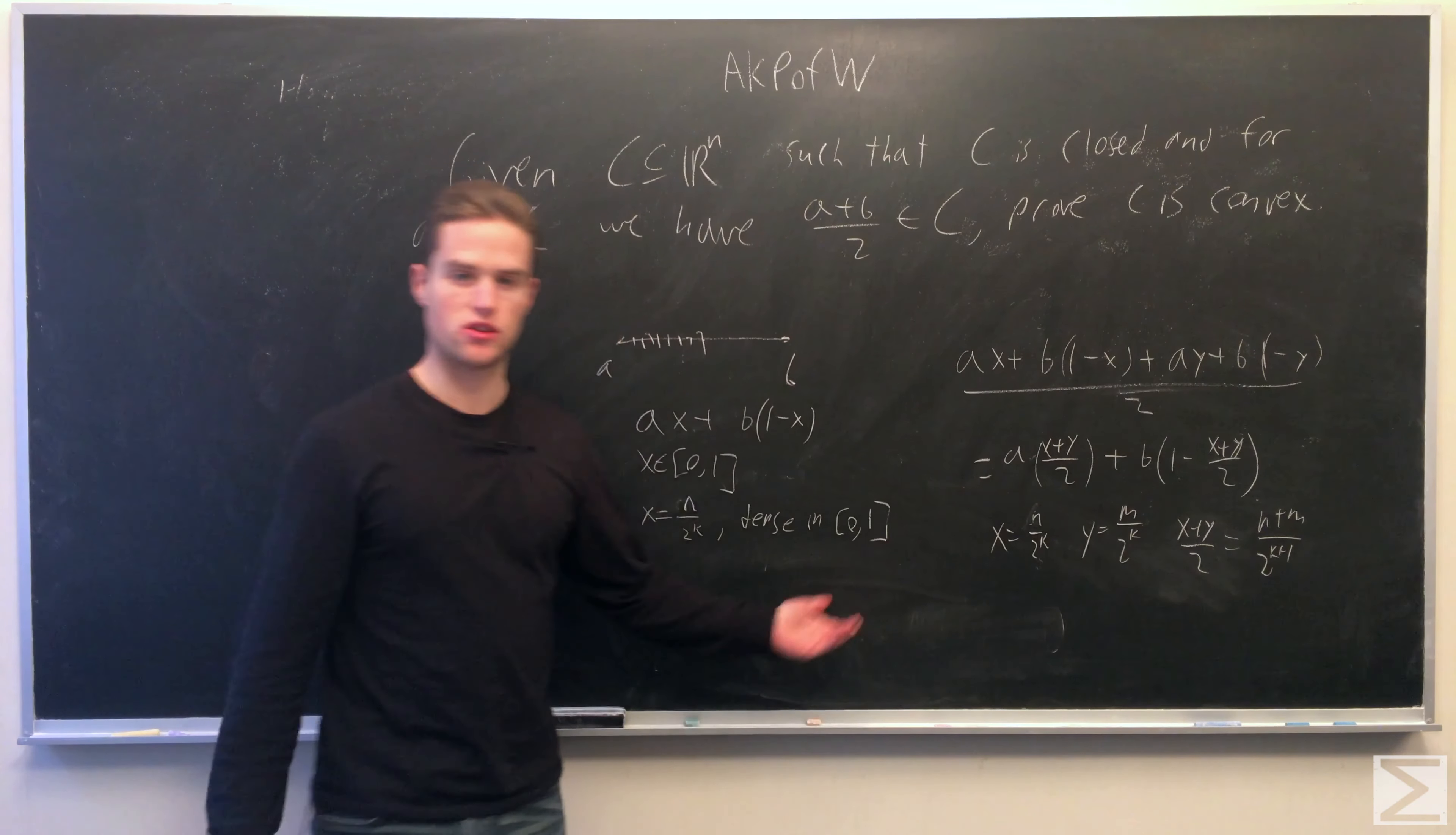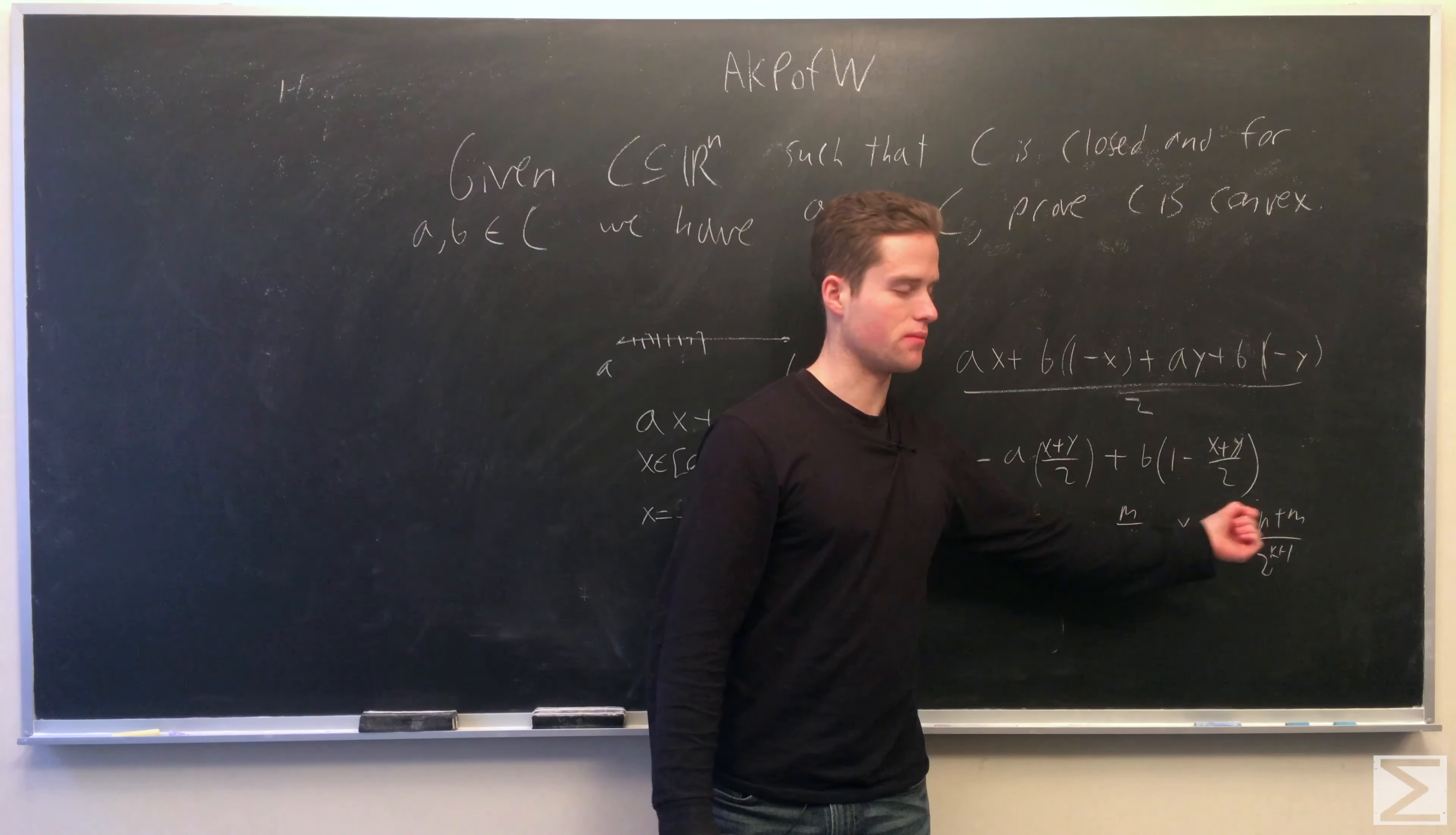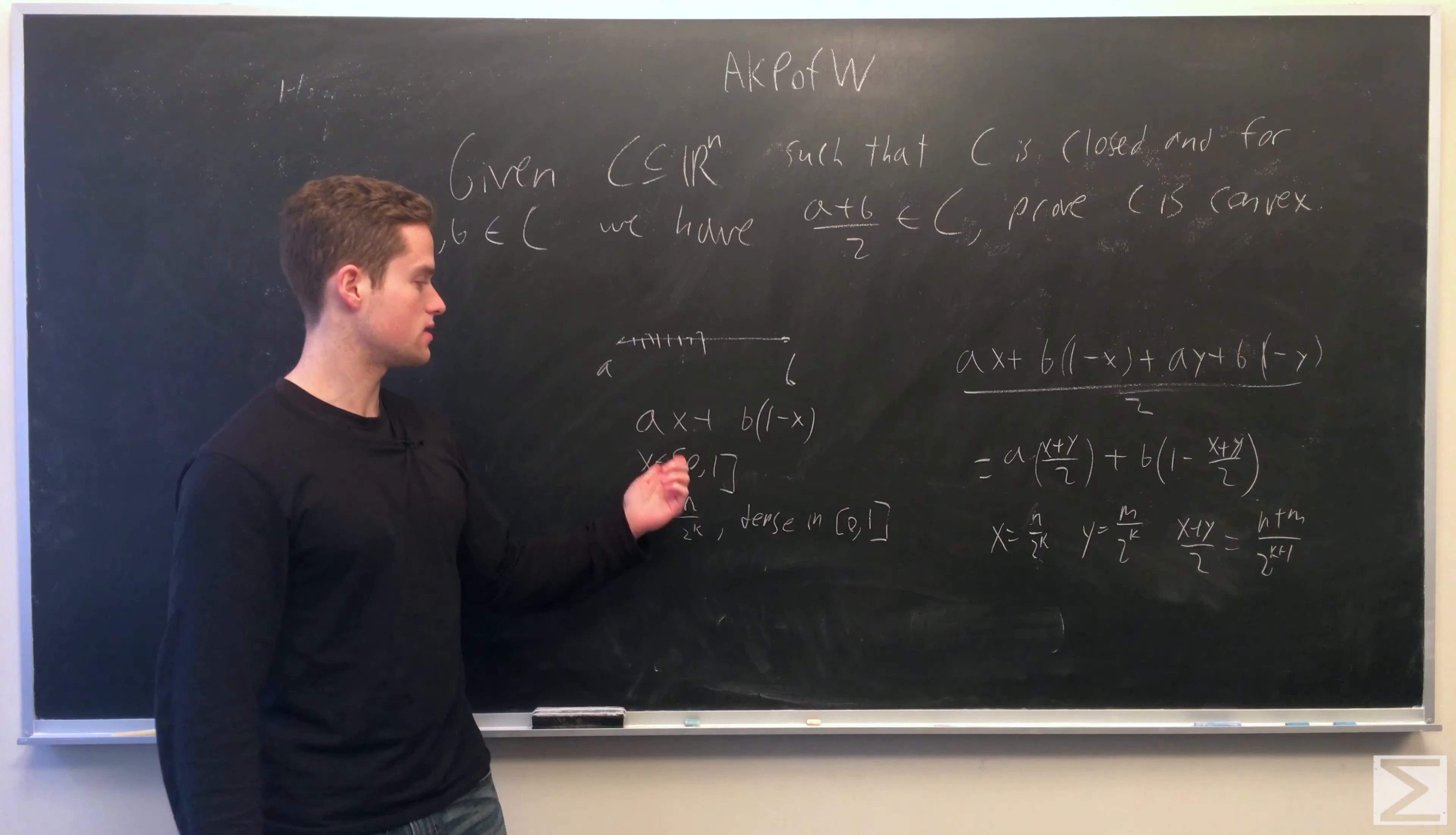And so by induction, we have all the possible dyadic rationals. And since the distance between, if we take 2^k large enough, the distance between each rational gets as small as we want. So this set of rationals is in fact dense in the interval [0,1].